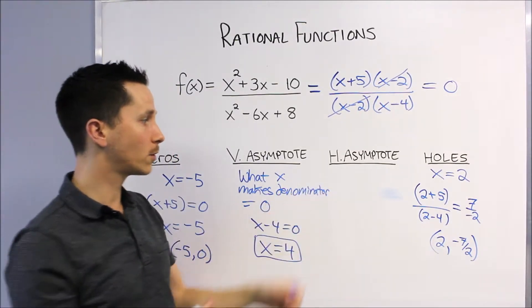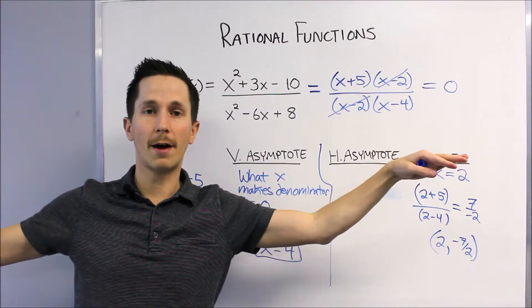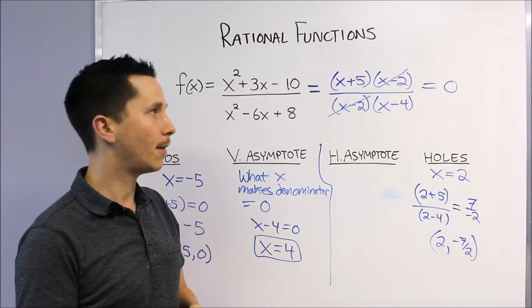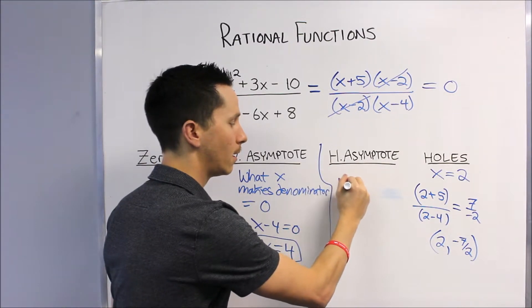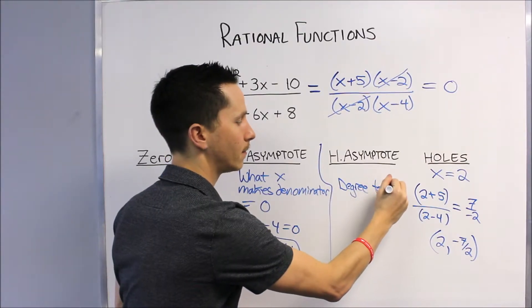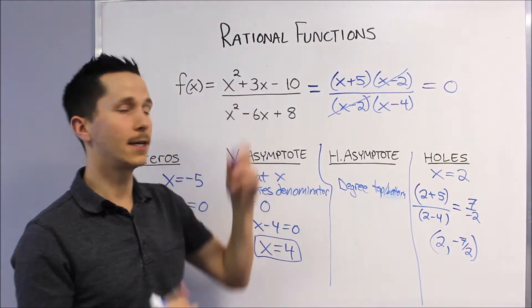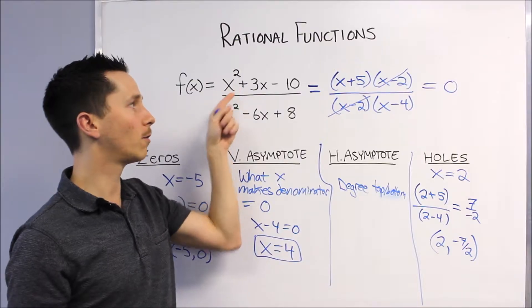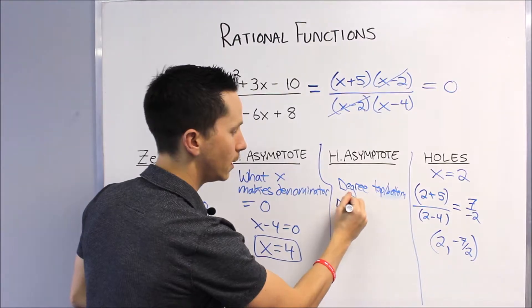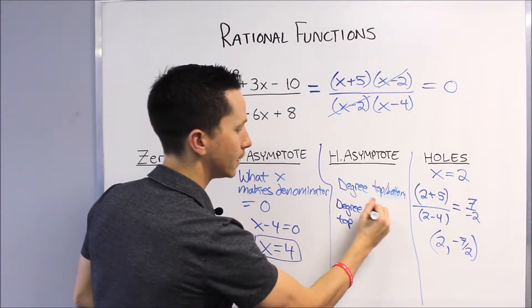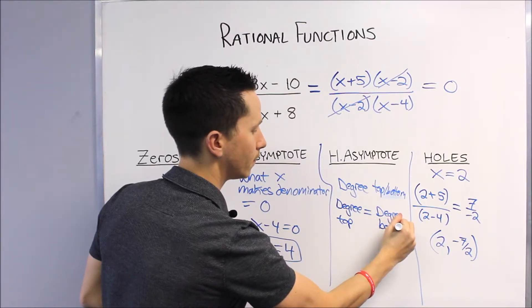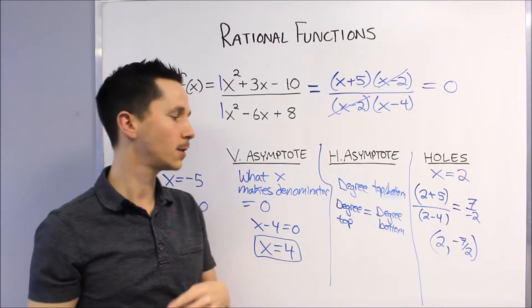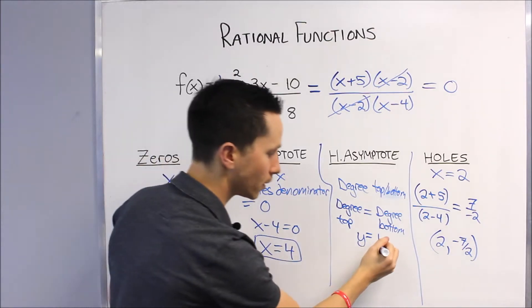Horizontal asymptotes: same concept except it's what happens as the graph goes far in either direction for the x. So as x gets really big or really big negative, what is y trending towards? There is a quick little rule we can use here, and it has to do with the degree of the top and bottom. When I say degree, again that's the highest exponent. If it's in factored form, you just count the exponents of the factors. But clearly the degree of the top here is 2 and the degree of the bottom here is 2 as well. So when the degrees are equal, so when degree top is equal to degree bottom, that is when we take the coefficients.